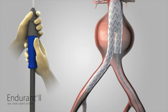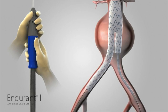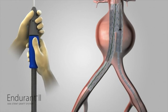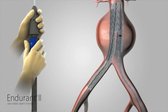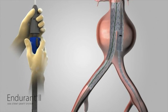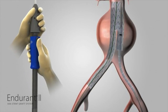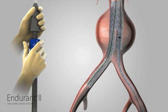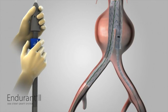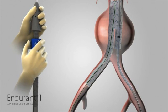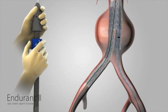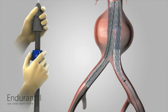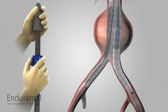Hold the front grip of the delivery system stationary. Then slowly withdraw the graft cover with the other hand by rotating the slider counterclockwise. At any point, use your thumb to pull the trigger on the slider and pull the slider back all the way to finish deploying the stent graft.